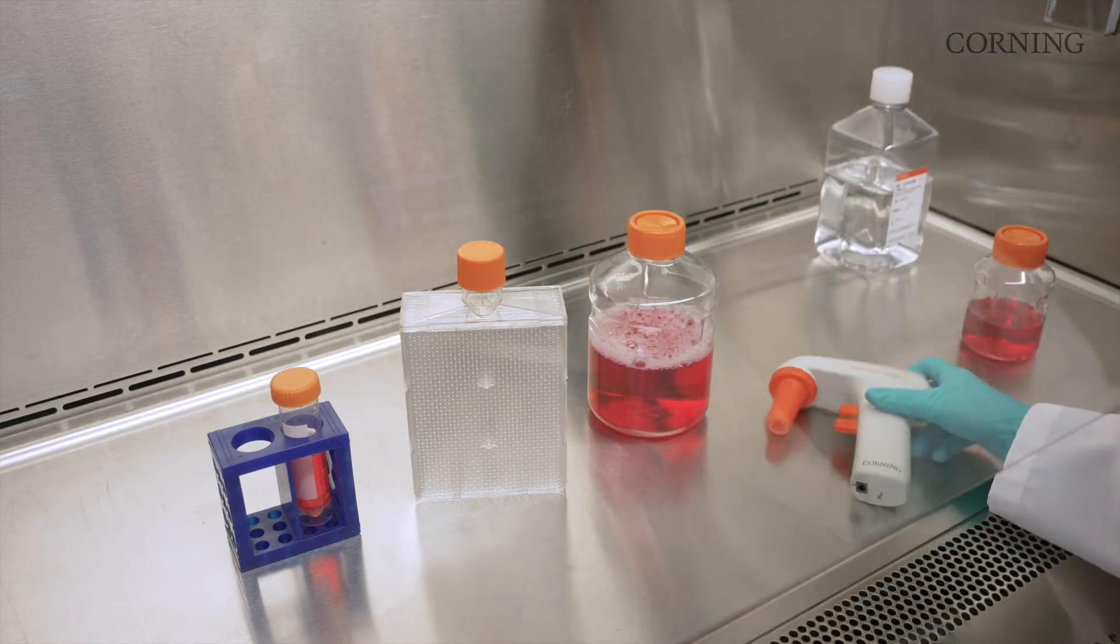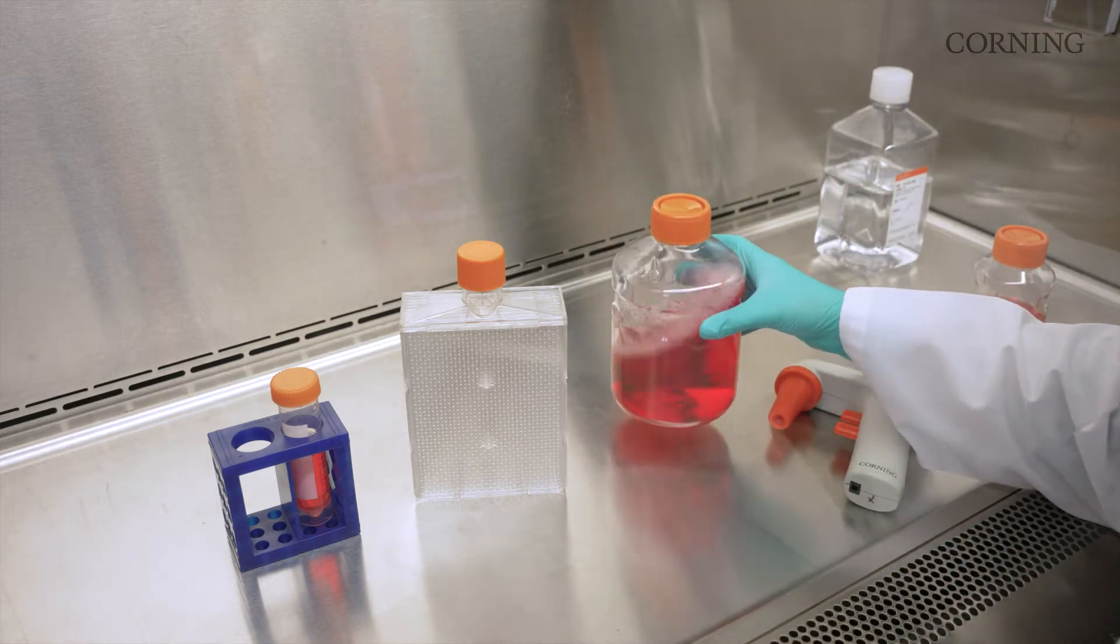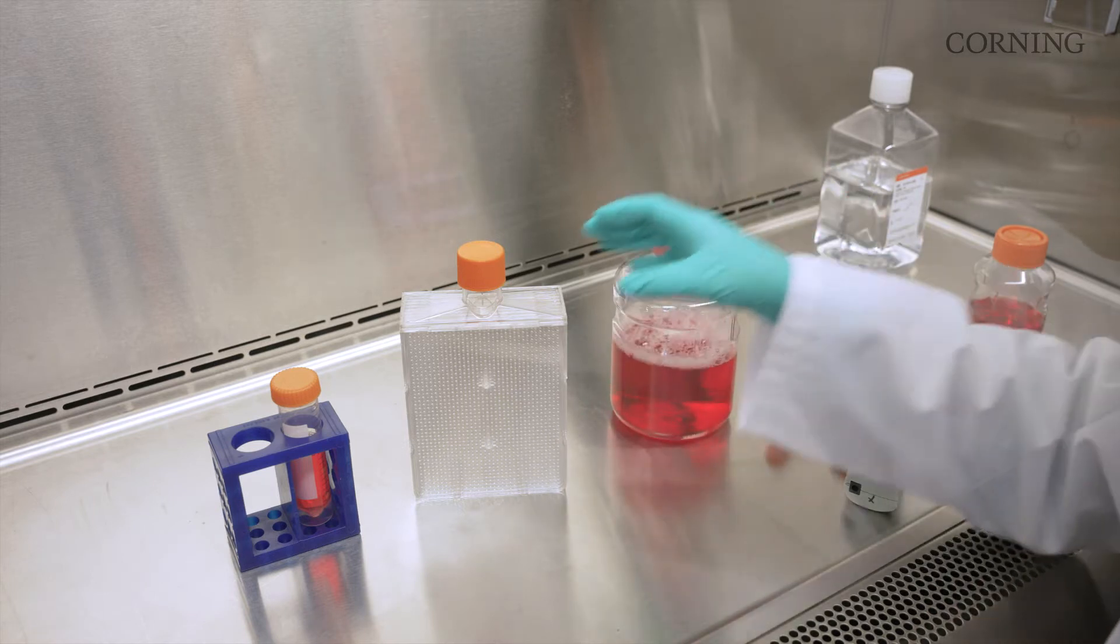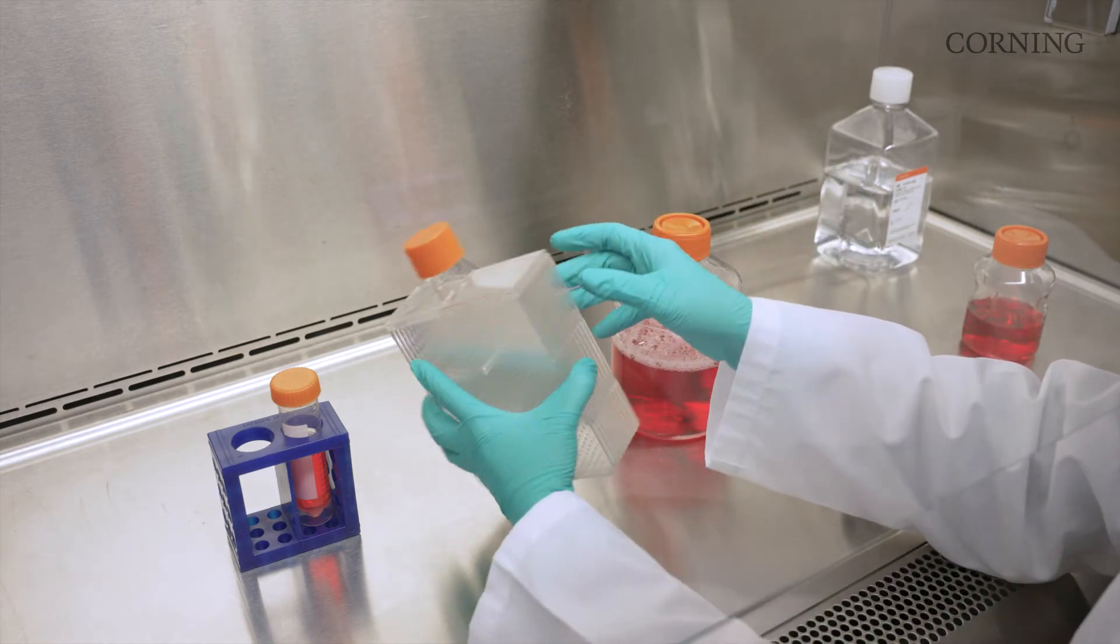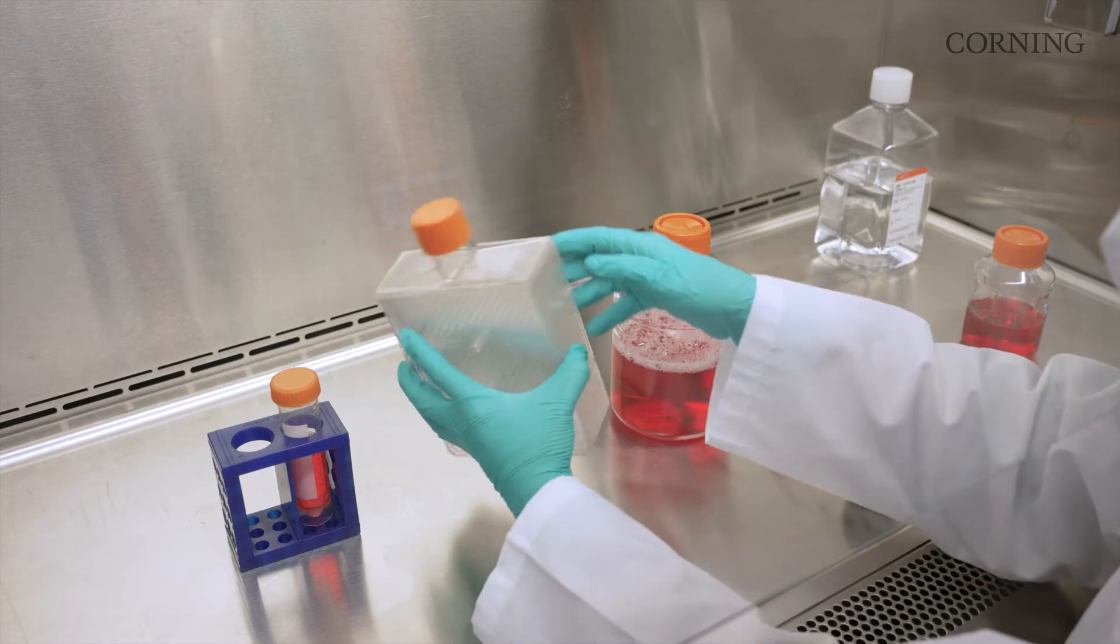Add your cell suspension, stir the solution, and then tilt the hyperflask vessel on its back corner at a 30 degree angle with the barcode facing the back of the hood.